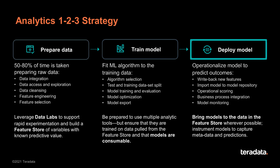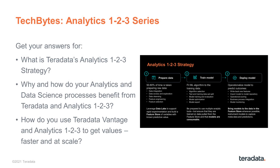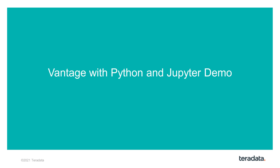And Stage 3: deploy those models to score live data. For more information on Teradata's Analytics 1.2.3 strategy and Vantage capabilities that support the strategy, I encourage you to watch other episodes in the series. In today's demonstration, you will see how to start with Analytics 1.2.3 in Python with Vantage. We will see how to connect to Vantage from a Jupyter Notebook and how to make our first visualization to pave the way to feature engineering and data preparation. Now, let's proceed to the demo.